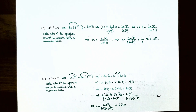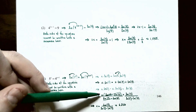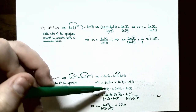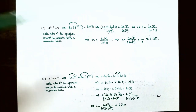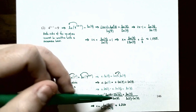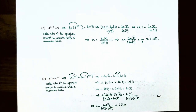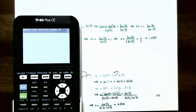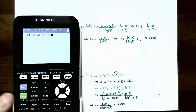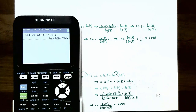Factor out x from the left side: x times the quantity ln(5) minus ln(4) equals ln(4). Divide both sides by ln(5) minus ln(4): x equals ln(4) divided by the quantity ln(5) minus ln(4). This is the exact solution. Using a calculator — enclose the denominator in parentheses — the answer is approximately 6.2126, or rounded to three decimal places, 6.213.